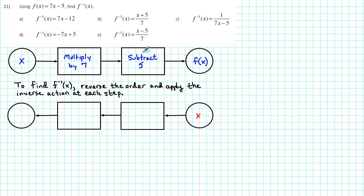The inverse action of subtracting is adding, so instead of subtracting 5, we'll need to add 5. Then we need to undo multiplying by 7. To undo multiplication, we use division, so we'll divide by 7.